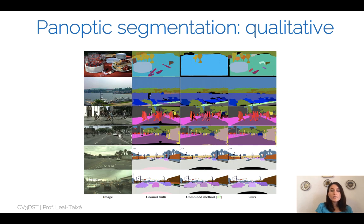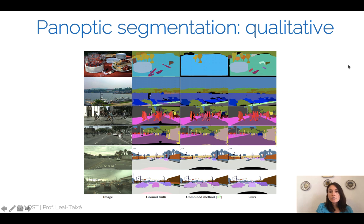Qualitative results for panoptic segmentation look quite good — computer vision can predict stuff classes without instance IDs, as well as things classes with correct semantic labels and separated instances, for example different glasses separated into different instances.